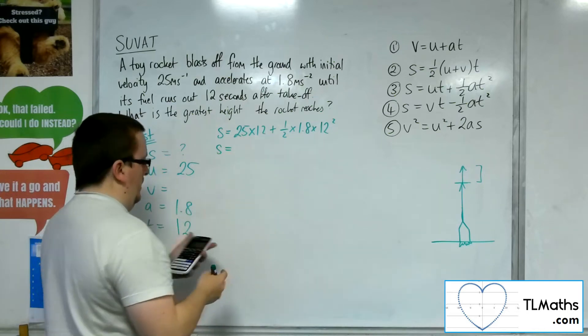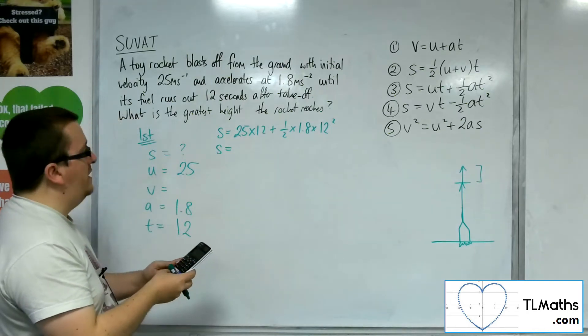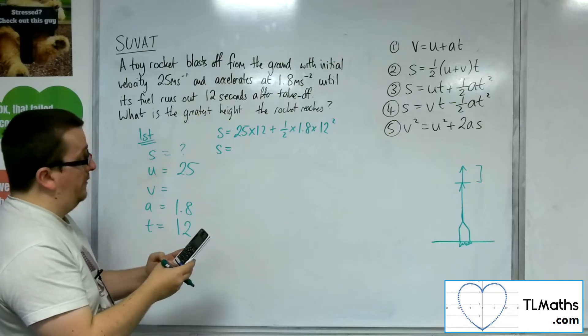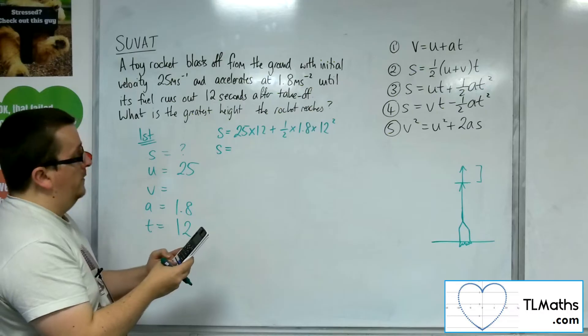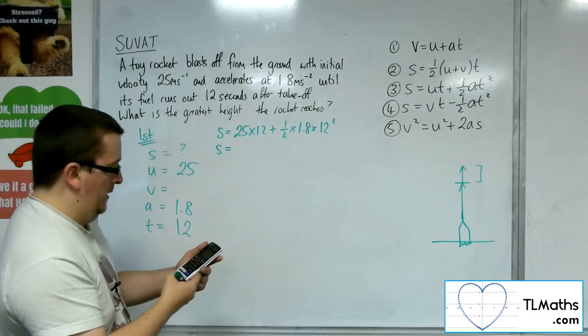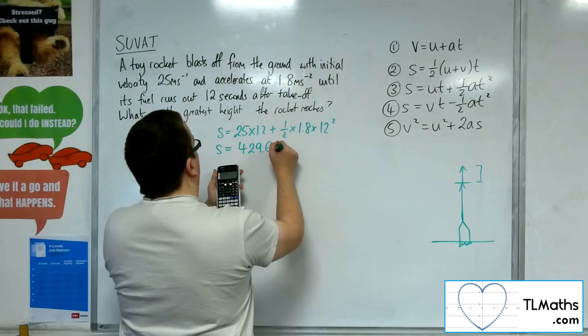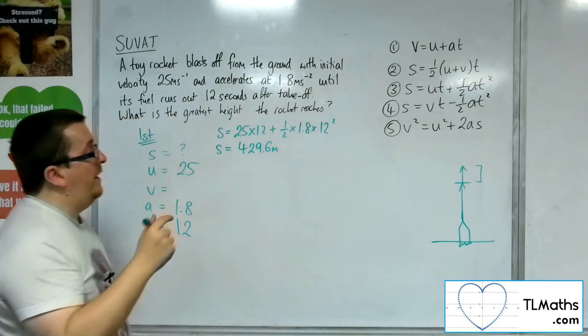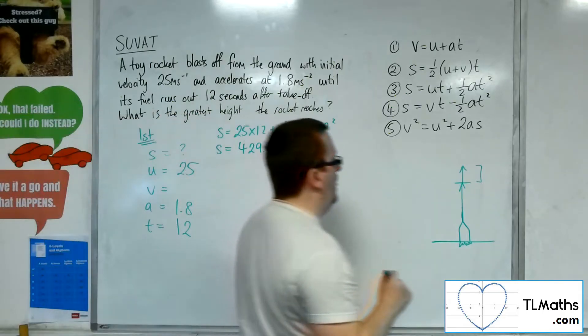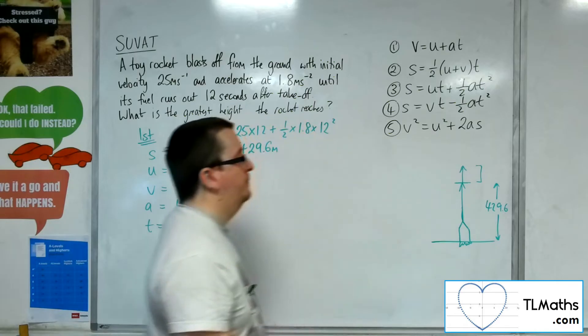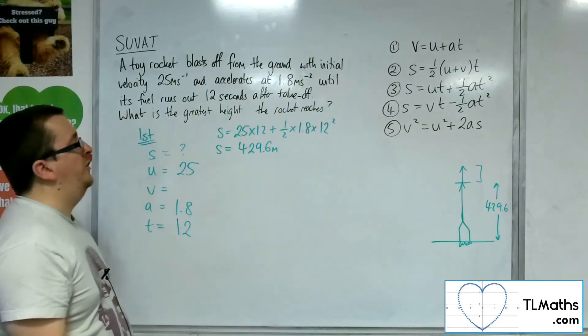So, the displacement in the first 12 seconds is 25 times 12, plus 0.5 times 1.8, times 12 squared. And that gets me 429.6 metres. So that's how far it's travelled in the first 12 seconds of motion, that's its displacement.